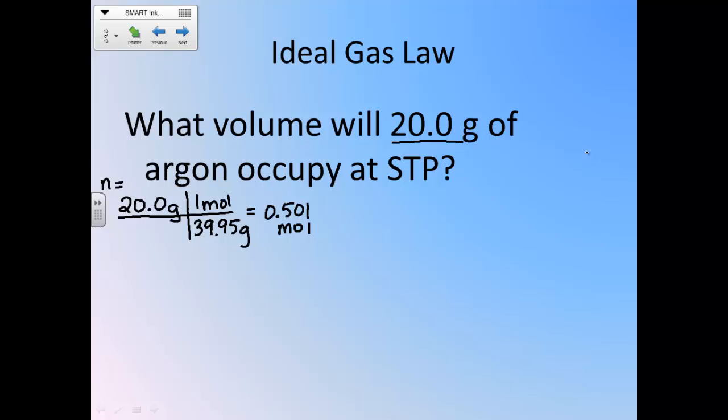Now what else do we have? Standard temperature and pressure. What's standard temperature? 273. What's standard pressure? 1. You can choose one atmosphere. If you choose atmospheres, what's your R value? 0.0821. And we're looking for volume. You could choose the other standard pressure if you wanted. That would be 101.3 kPa. Either one would work.